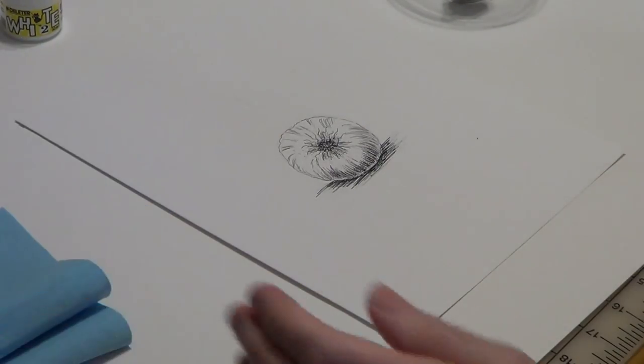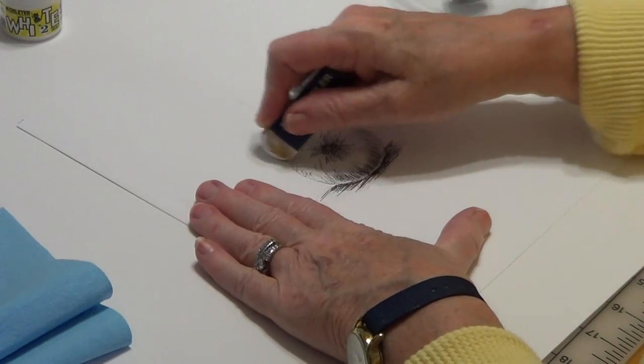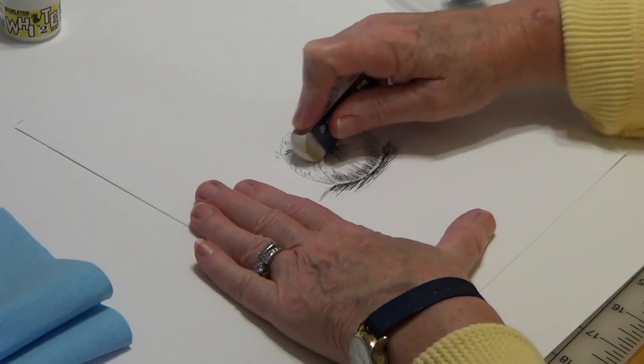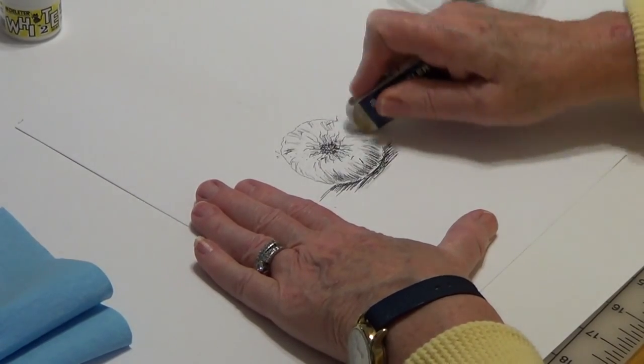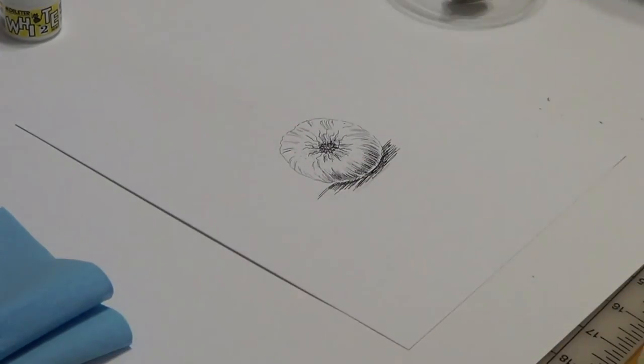This should be dry enough. I'm going to take my eraser. Hopefully I won't smear. And so that's the method: pencil, ink, and then erase. And then if you want to add some watercolor wash, that's great. So there you have it.